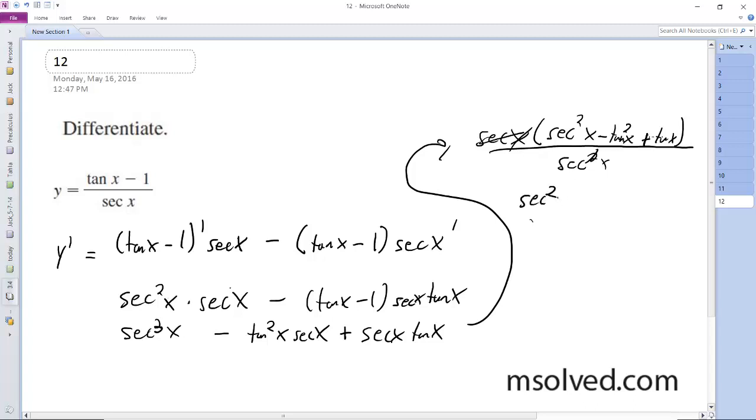What we have here is an identity. Secant squared x minus tangent squared x is an identity. This is just one. So ultimately we have one plus tangent x over secant x. That's it.